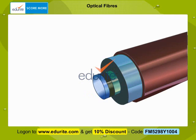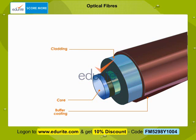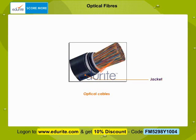A single optical fiber consists of three layers: core, cladding, and buffer coating. The core is the thin glass center of the fiber through which the light travels. Cladding is the outer optical material surrounding the core that reflects the light back into the core. Buffer coating is the plastic coating that protects the fiber from moisture and from any kind of external damage. The bundles are protected by the cable's outer covering called a jacket.